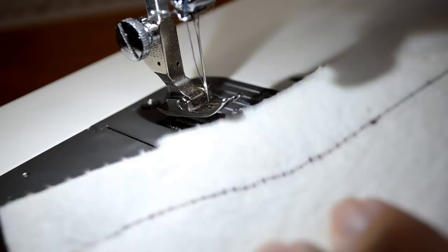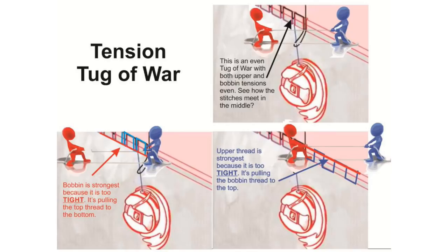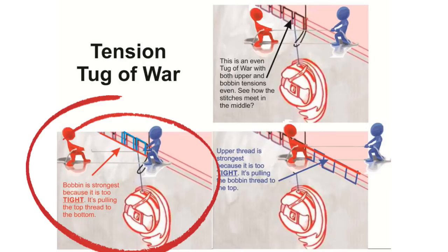Now while you're busy sewing, your machine is playing tug of war between your bobbin and your top thread. In this particular case, it appears your bobbin thread is winning because it's stronger and it's pulling the top thread down to the bottom of the quilt. Let's address that before we go any further.